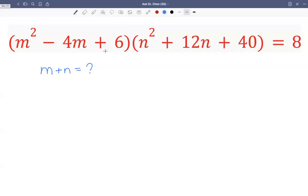Let's solve this question. We're given this equation m squared minus 4m plus 6 times n squared plus 12n plus 40 equals 8. And we're asked to find the sum of those two variables, m plus n.